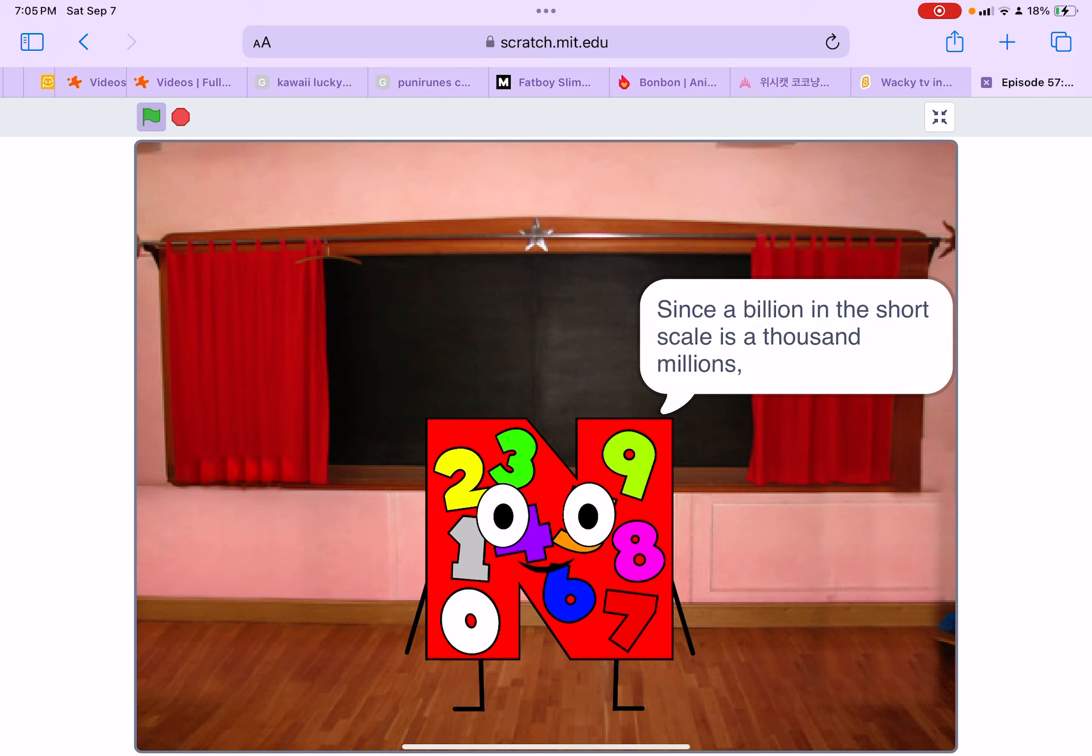Since a billion in the short scale is a thousand million, and Spanish uses a long-scale system, billion is mil millones in Spanish.